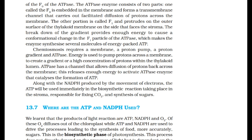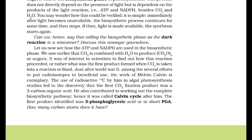The products of the light reaction are ATP, NADPH, and O2. O2 diffuses out of the chloroplast while ATP and NADPH are used to drive the processes leading to the synthesis of sugars. This is the biosynthetic phase of photosynthesis. This process does not directly depend on the presence of light but is dependent on the products of the light reaction — ATP and NADPH — besides CO2 and H2O.